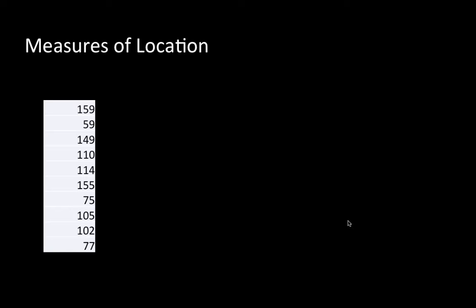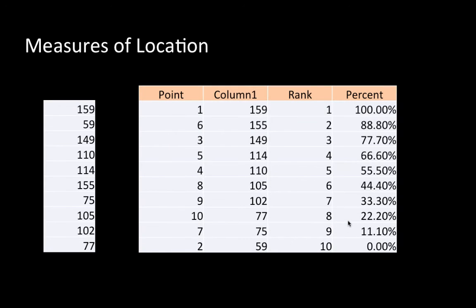Then there are measures of location. Given a value — say, one of 100 company sales values — you ask: where does it fall in the continuum? If you arrange all the values from lowest to highest, does a given company's sales fall in the top 25 percent, top 50 percent, or at the 25th percentile — one quarter of the way up?